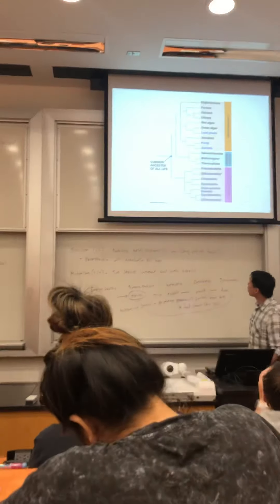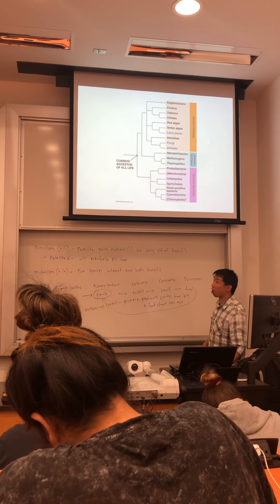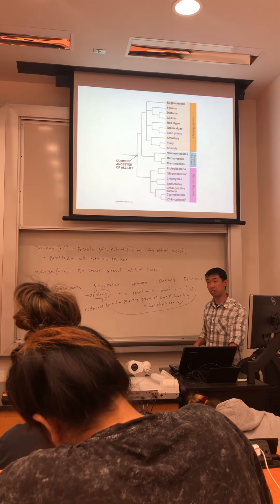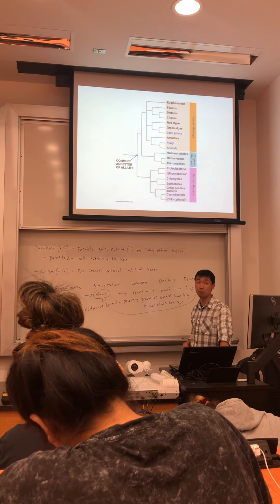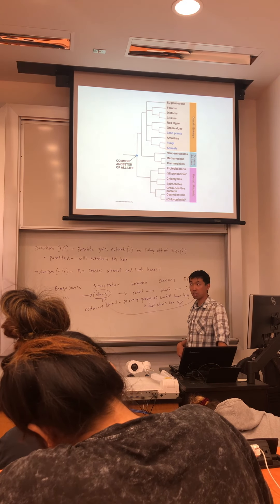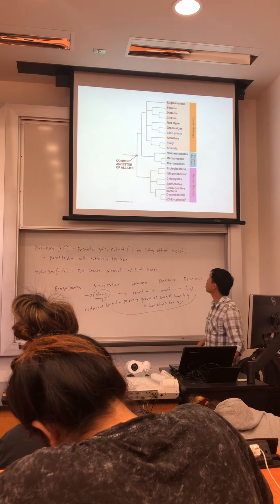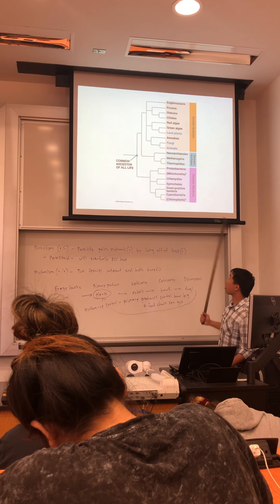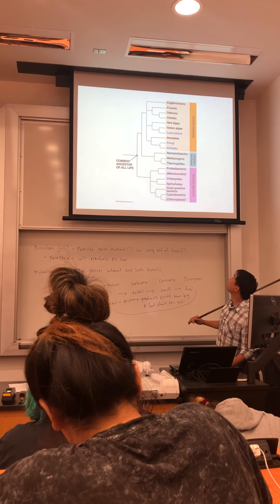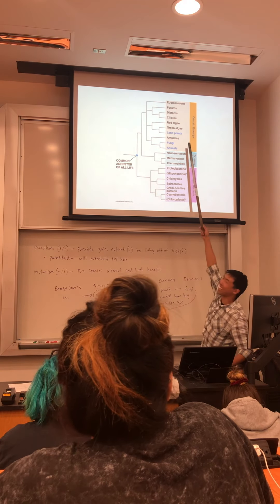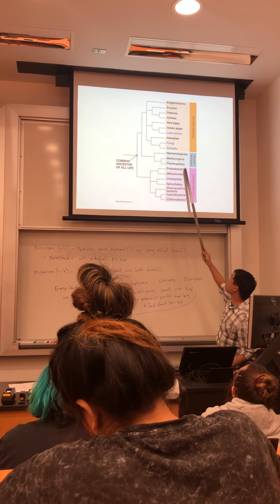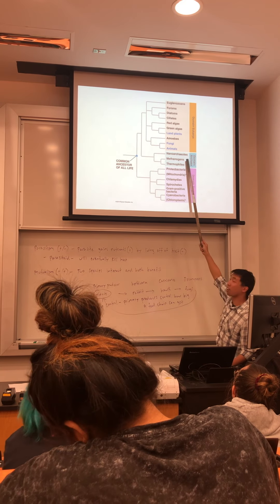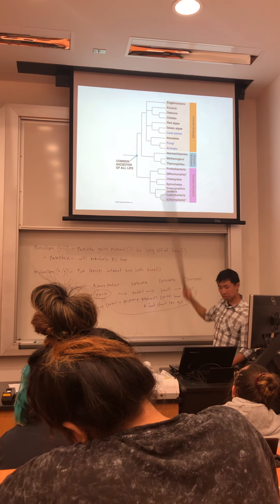Domains of life. So one of the things I could ask you guys about are what are the major differences within the three domains, or I can ask you what is the difference between a eukaryote and a prokaryote. Keep in mind those can show up as exam questions. Which one of these three are eukaryotes? Domain eukarya would be the eukaryotes. These two are prokaryotes: bacteria and archaea.